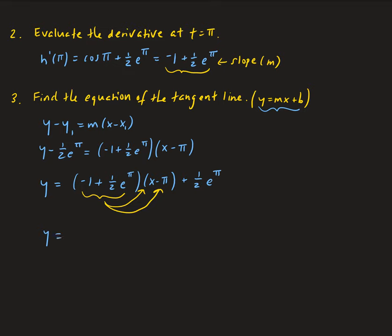So y equals: we keep minus one plus one-half e to the pi as the coefficient, distributed to x. Then we distribute to the negative pi term: negative one times negative pi gives us pi, and one-half e to the pi times negative pi gives us minus one-half pi times e to the pi. Then we have the remaining plus one-half e to the pi.